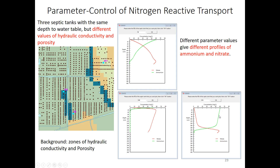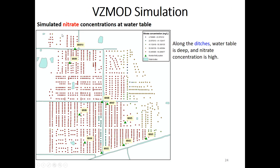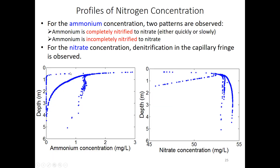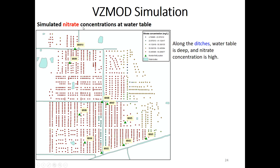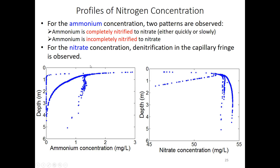We also looked at the WISMOD simulated nitrate concentration at the water table — essentially the opposite of ammonia. Along the ditches the water table is deep, so nitrate concentration is high because nitrification is complete. In the inland area, ammonium concentration is high and as a result nitrate concentration is low.